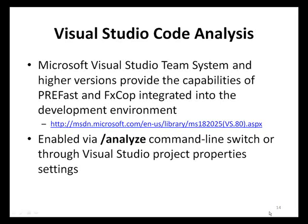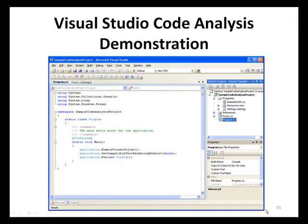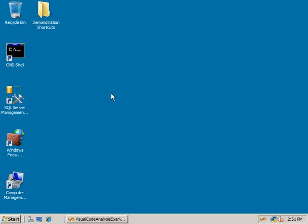If organizations prefer to access the features and capabilities of PreFast and FxCop in a more integrated fashion rather than as standalone tools, such organizations can do so by using Visual Studio Team Edition and higher versions. The code analysis features of Visual Studio can be enabled using the /analyze compiler switch for command line application build scenarios, or via the project property settings for applications built within the Visual Studio integrated development environment. Let's see a demonstration of the Microsoft Visual Studio /analyze feature. In this demonstration, you will use the Microsoft Visual Studio source code analysis feature to analyze source code for security vulnerabilities in C and C++ source code.